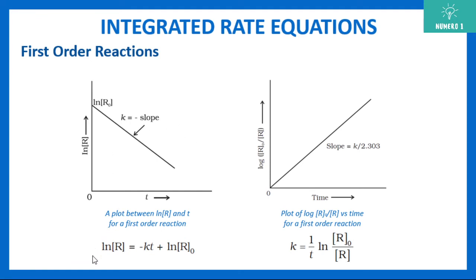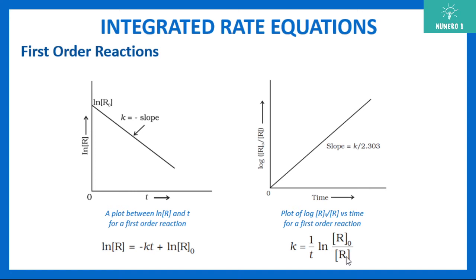Next, to express this graphically: ln R equals minus kt plus ln R naught. This is again in the form y equals mx plus c, where ln R naught is your y-intercept and slope is minus k. Note that this is a log versus time graph, so this graph paper should be a semi-log graph paper. You can also express k equals (1/t) ln(R naught / R).